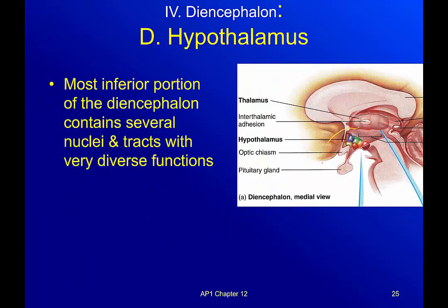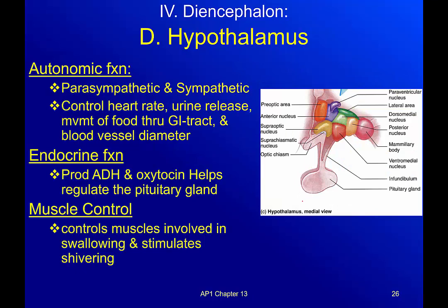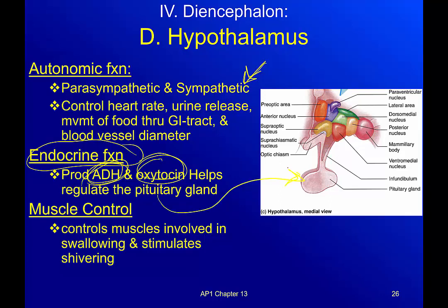The hypothalamus — down here where all the color is — is the most inferior portion of the diencephalon. It contains several nuclei and tracts with very diverse functions. For autonomic function, remember autonomic means self-controlled: parasympathetic and sympathetic. It controls your heart rate, urine release, movement of food through the GI tract, and blood vessel diameter. For endocrine function, regions in the hypothalamus produce antidiuretic hormone (ADH) and oxytocin, and it helps regulate the pituitary gland.